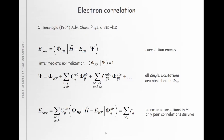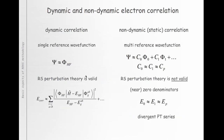So this description of the correlation energy works provided that we have a good overlap between the exact wave function and our zero-order (mean-field) wave function. Is this always the case? That is a big question.